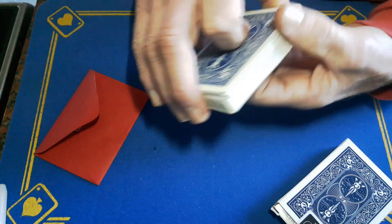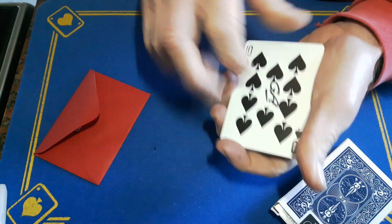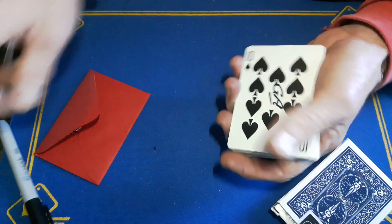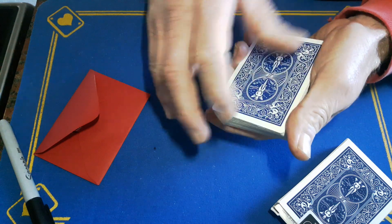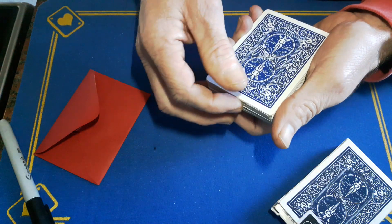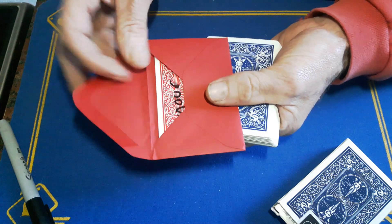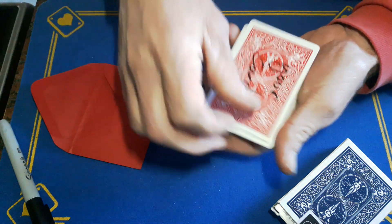Turn over a triple lift, get them to sign this card, turn the triple back over, place the signed card somewhere in the middle. Now go back to your card in the envelope.